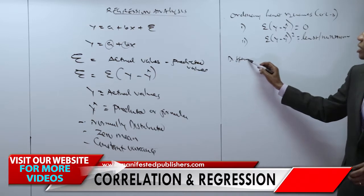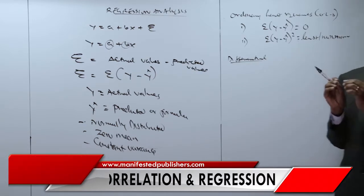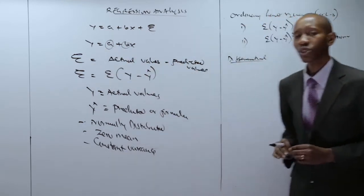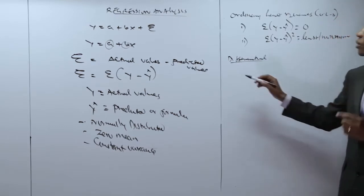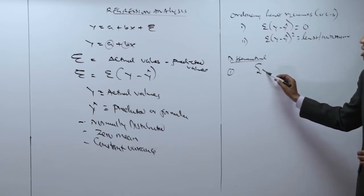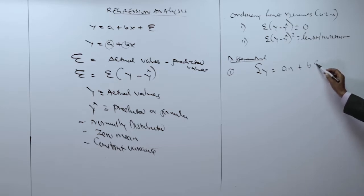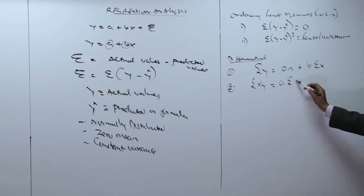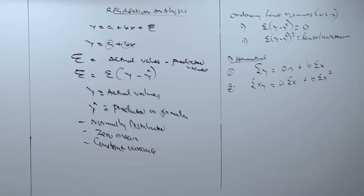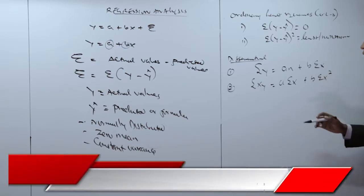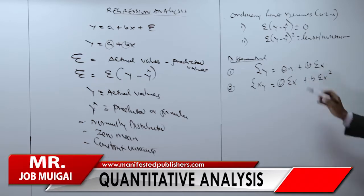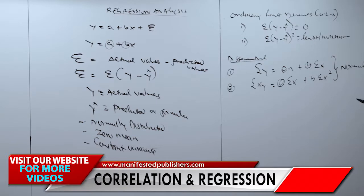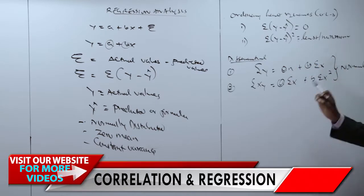Using differential calculus, we develop two equations that we will use to determine the values of a and b in the linear regression equation y is equal to a plus bx. Equation one would be that the summation of y equals na plus b times the sum of x. Equation two would be that the sum of xy equals a times the sum of x plus b times the sum of x squared. These two equations are referred to as the normal equations for the straight line y equal to a plus bx.